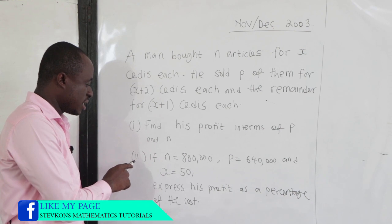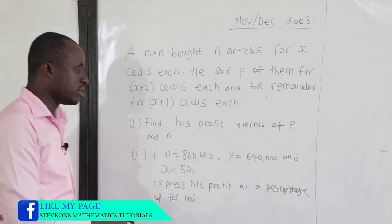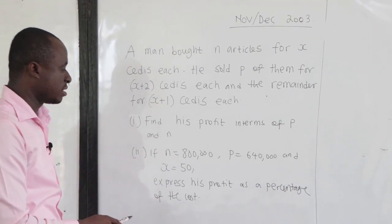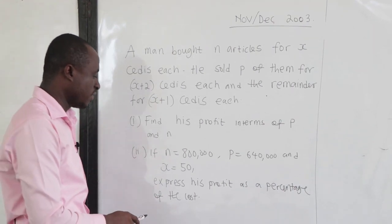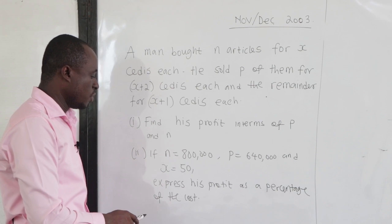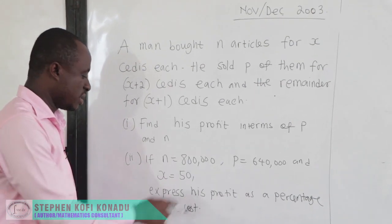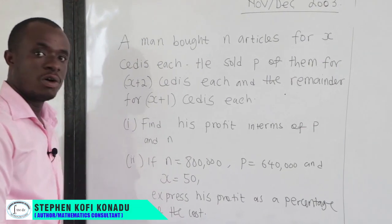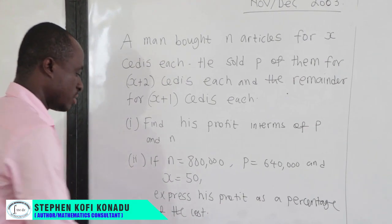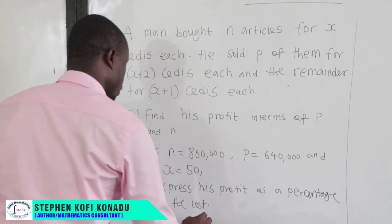And the second part: if N is 800,000, P is 640,000, and X is 50, we should express his profit as a percentage of the cost.